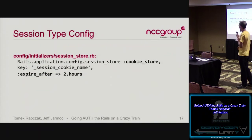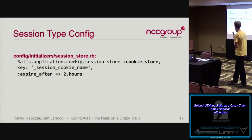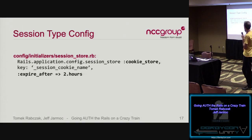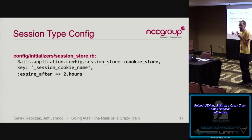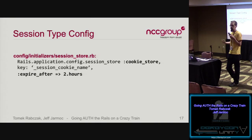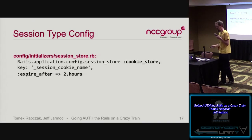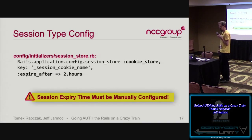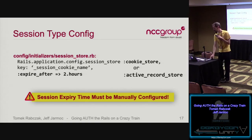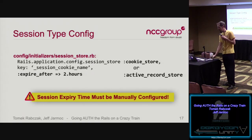These session types are configured in your session store initializer file. The 'expire_after' setting is not there by default — if you don't have it, your sessions will live forever. That's something to look at when assessing applications. Session expiry time must be manually configured. If you want to use ActiveRecord store, you still have to include the gem. With cookie sessions, you'll also have a 'secrets.yaml' setting containing your secret_key_base — the encryption key for encrypting those sessions.